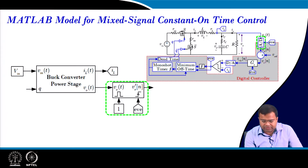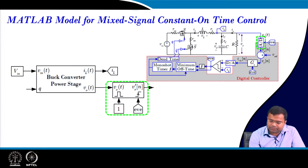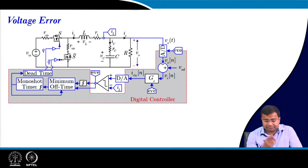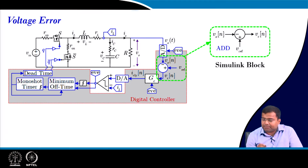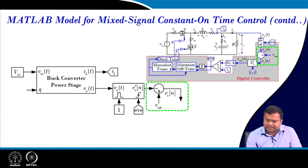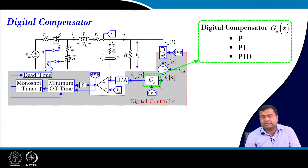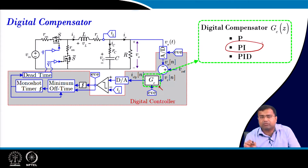We will use an event-triggered A-to-D converter to sample the output voltage, giving a sampled output voltage. This sampled output voltage is compared to the reference voltage to generate the error voltage. The error voltage then goes to the next compensator — the controller, which can be P, PI, or PID. Since this is current mode control, we typically consider a PI controller.